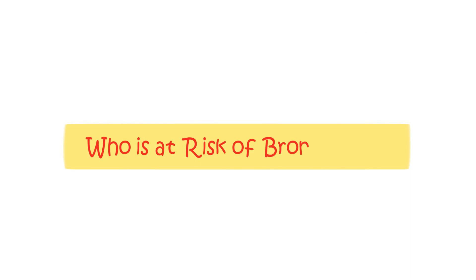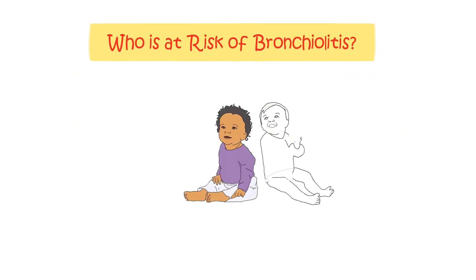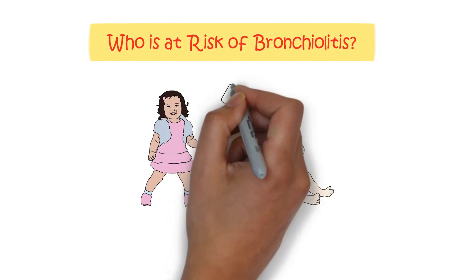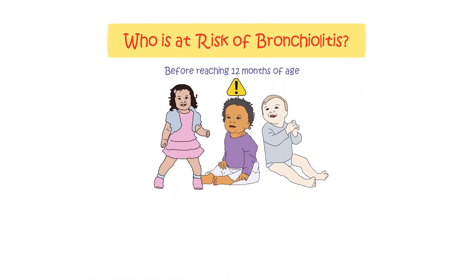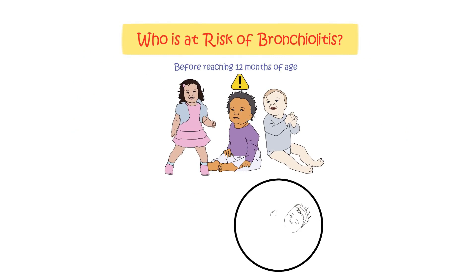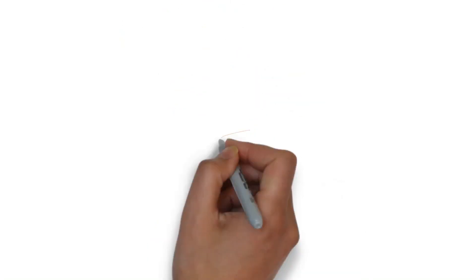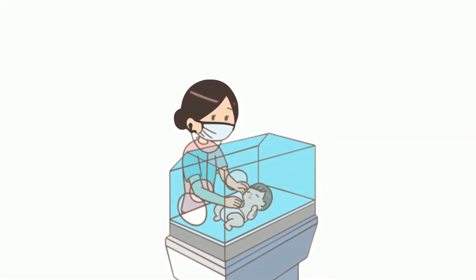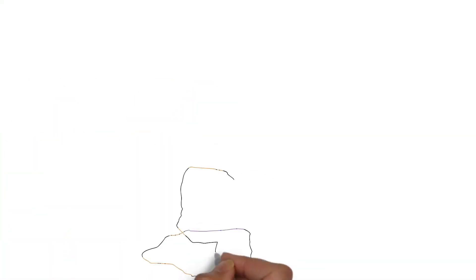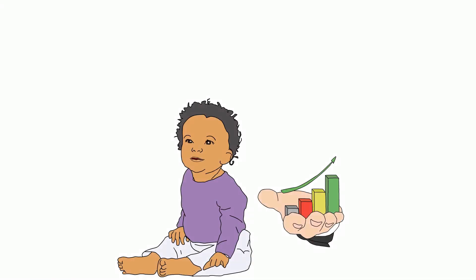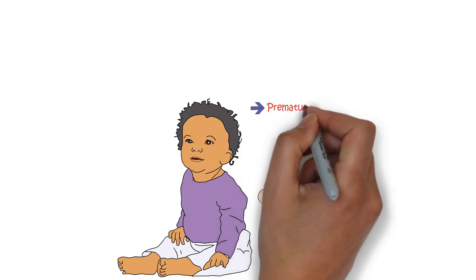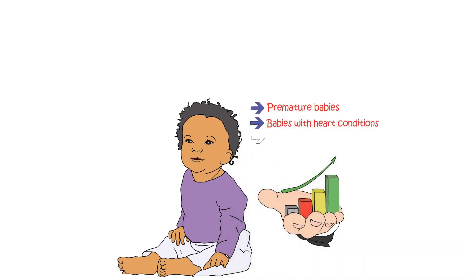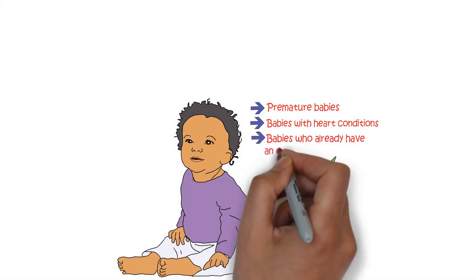It is estimated that around 1 in 3 babies in the UK experience bronchiolitis before reaching 12 months of age. This condition is most commonly observed in infants aged between 3 and 6 months. For the majority of affected babies, bronchiolitis is not a severe illness. However, approximately 3 in 100 babies require hospital admission due to bronchiolitis before their first birthday. Babies at higher risk of developing a more serious form include premature babies, babies with heart conditions, and babies who already have an existing lung condition.